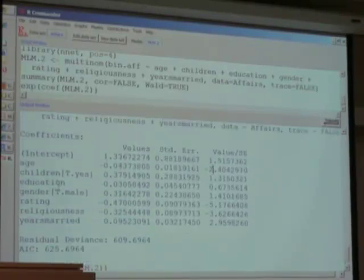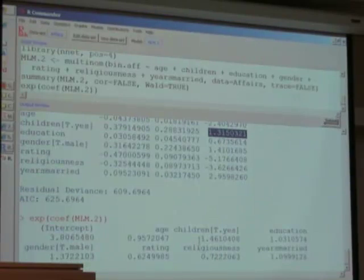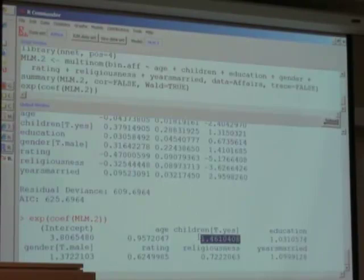Similarly, if you look at children here, not a statistically significant coefficient, but it suggests that the odds of having an affair are 46 percent more likely for a married individual with kids than an individual without children.